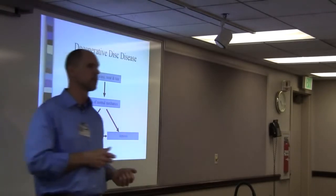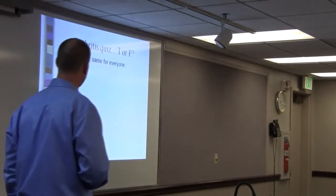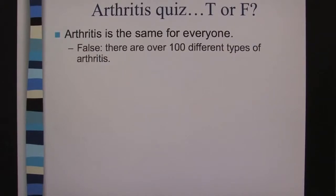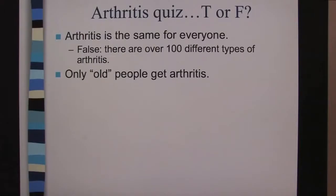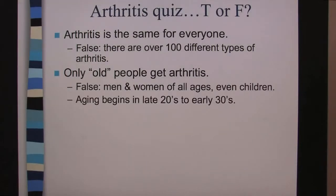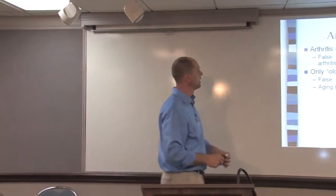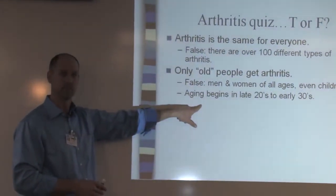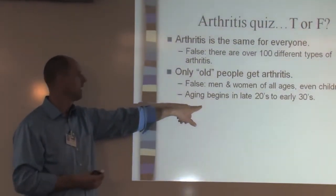Here's a quick quiz on arthritis. First: arthritis is the same for everyone — false. There are over 100 different types of arthritis. Second: only old people get arthritis — false. Men and women of all ages, even children — juvenile rheumatoid arthritis is a type of arthritis. The aging process actually begins in the late 20s to early 30s. So we grow up, we get strong, we're healthy — and then it's all downhill from there, some of us a little sooner than others.